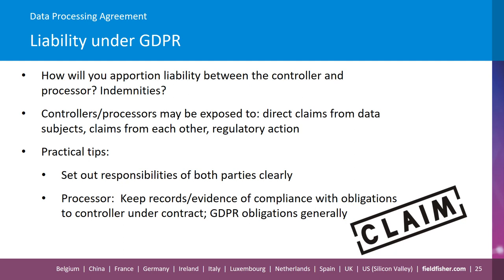Moving on to liability under the GDPR — a question that often comes up when negotiating a DPA is how to apportion liability between the controller and the processor. Do you put in place indemnities? Controllers and processors may be exposed to direct claims from data subjects, claims from each other, and regulatory action. Processors may face claims from controllers for breach of contract, but processors will only be liable for the damage caused by processing where they have not complied with a GDPR obligation specifically directed at processors, or where they have not acted in accordance with the instructions of the controller. In terms of practical tips, it's important to set out the responsibilities of both parties clearly should a dispute arise. And if you're a processor, make sure you keep records and evidence of compliance with obligations to the controller under the contract and your GDPR obligations generally.